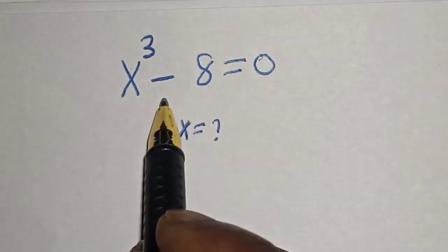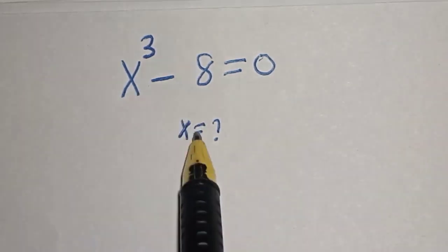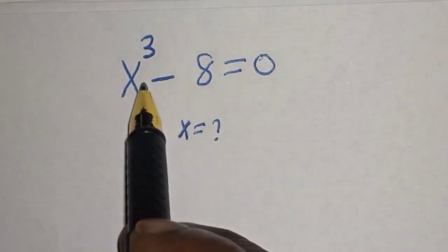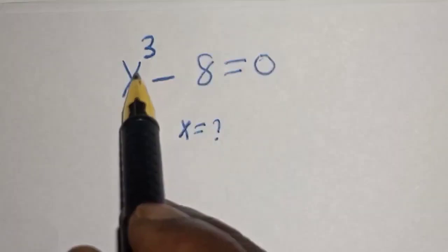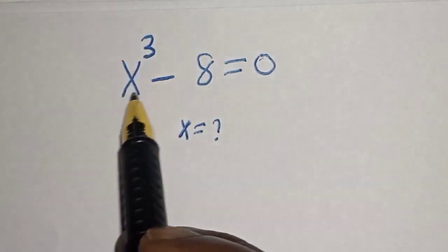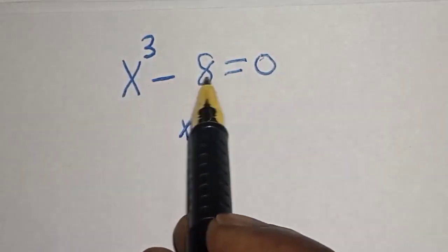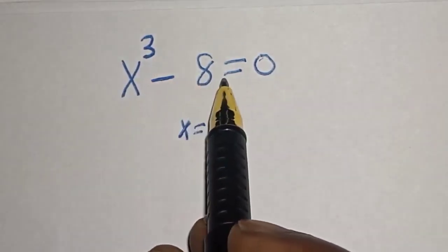Hello, welcome to Magist. In this class we want to find the value of s from this equation: s raised to power 3 minus 8 is equal to 0.